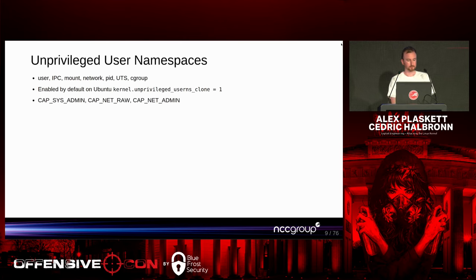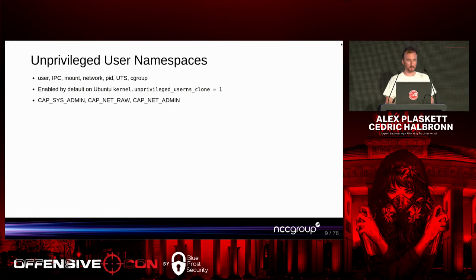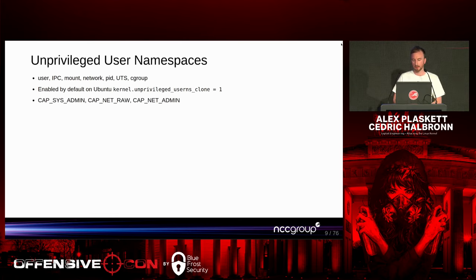User namespaces are interesting from an attacker perspective because, while they provide isolation, they actually expose more kernel attack surface to a process executing within a namespace. On Ubuntu, unprivileged user namespaces are enabled — an unprivileged user can create these namespaces, and processes can gain capabilities they wouldn't normally have outside the namespace, but within the container they can actually hold those capabilities.